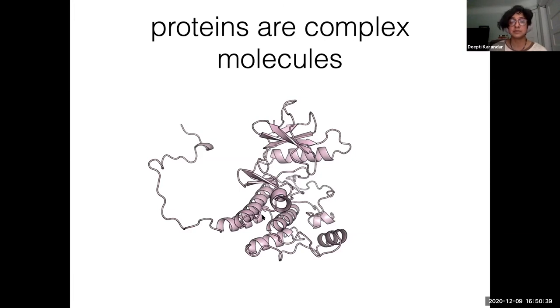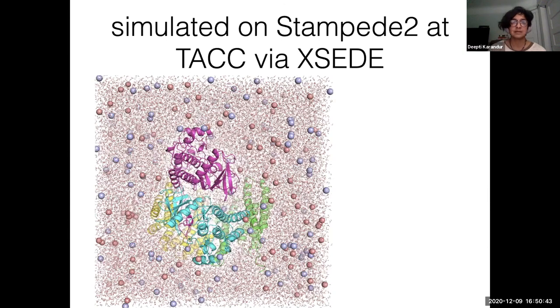The systems we study end up looking something like this—a system with four proteins in them: the pink one, cyan, green, and yellow, surrounded by water. There are ions: the blue ones are sodium ions, and these pink spheres are chloride ions. This system has about 200,000 atoms. We're trying to calculate the interaction between every atom in the system and every other atom. That's a lot of calculation to move you forward by two femtoseconds. We need to do this a lot to get to a microsecond.